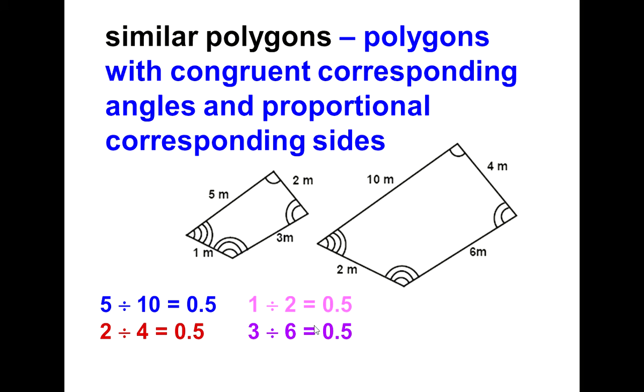Now I'm going to explain proportional corresponding sides. If I took two sides that were facing the same way, that's what we mean by corresponding. They're going to be proportional if I divide them and I get the same answer.